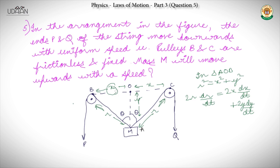Because both pulleys B and C are fixed, this whole term — 2X·(dx/dt) — will be zero. So we have dy/dt equal to (R/Y) into (dr/dt).